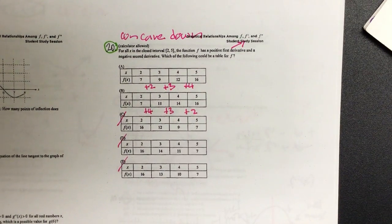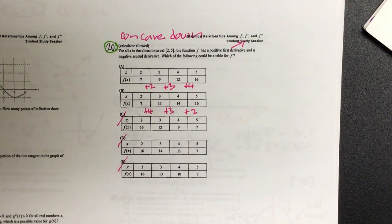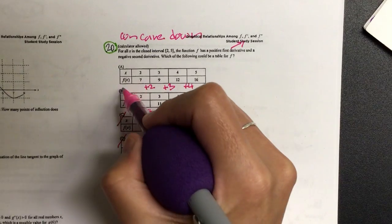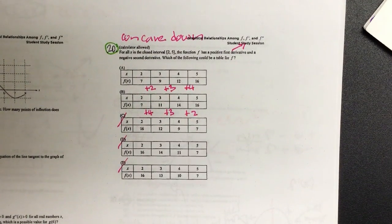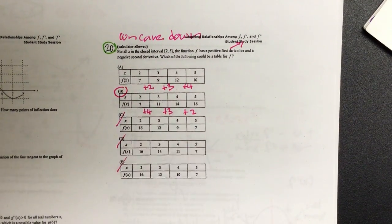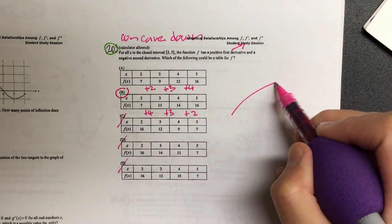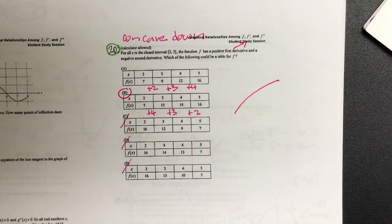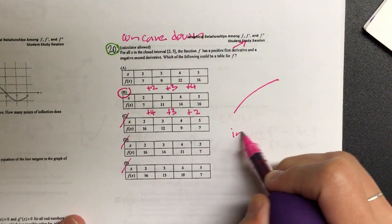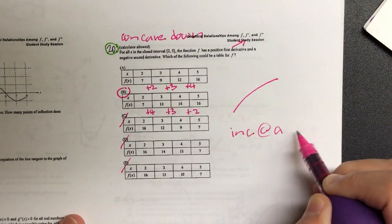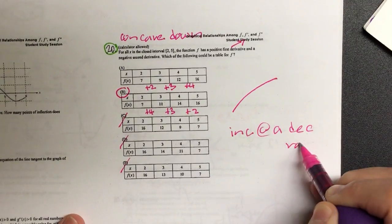So if it's concaving down, it should be increasing at a decreasing rate. So which one would that give us? B. Oh, that's right. So if you were to actually graph this, it's actually going to be concave but at a decreasing rate. So let's write out increasing at a decreasing rate.